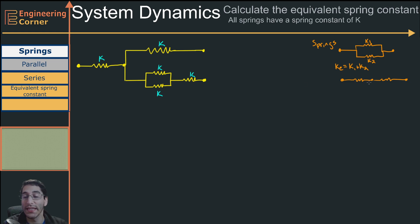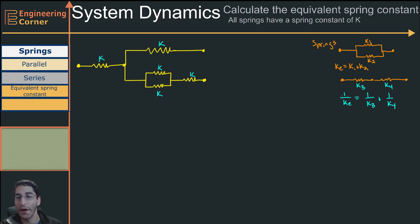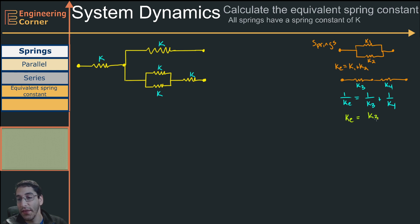Now if I have springs that are in series — let's call them k3 and k4 — my equivalent spring constant satisfies: 1 over ke equals 1 over k3 plus 1 over k4. Remember, you're solving for 1 over the spring constant, so you need to take the inverse. Alternatively, you can compute it directly as k3 times k4 divided by k3 plus k4.